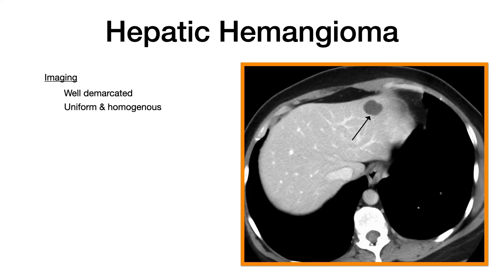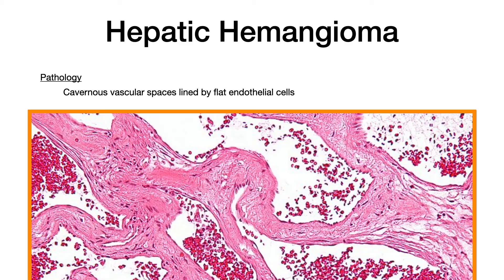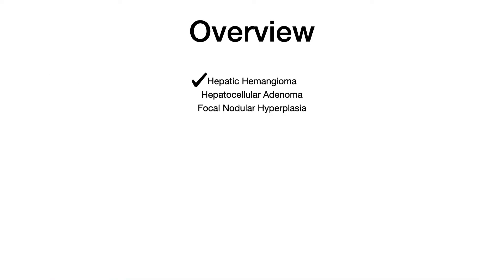Here's an image of hepatic hemangioma. The key thing to pay attention to is that it's very well demarcated — if you see a very well demarcated liver growth on imaging, that nudges you toward hepatic hemangioma. It is uniform and homogenous. As far as histology goes, you'll see cavernous vascular spaces lined by flat endothelial cells. The big takeaway: most common benign liver tumor, very well demarcated on imaging.